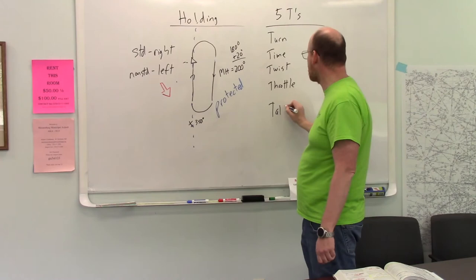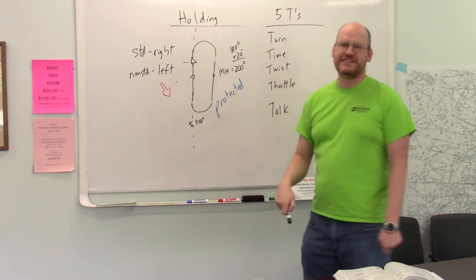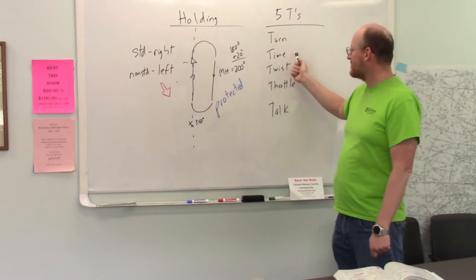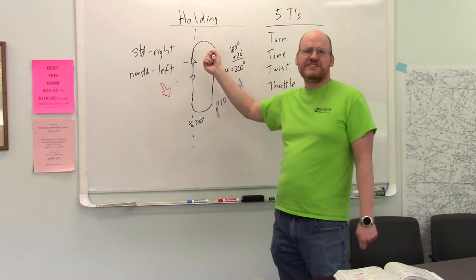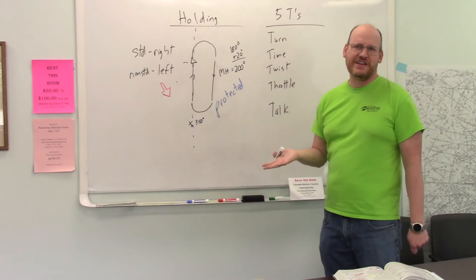Turn, time, twist, throttle. What does this mean? So, for example, when I get to my fix, I start my turn. I start, well, in this case, I don't start a timer. But if I had a timer, I would start my timer. I twist. Maybe I have to adjust my CDI. I need a different OBS. Throttle. Do I need to climb or descend? Talk.